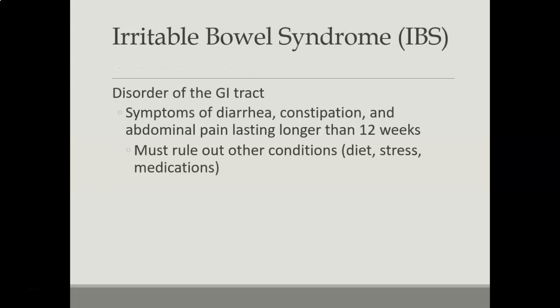Irritable bowel syndrome is a disorder where symptoms can be varied — diarrhea, constipation, or just abdominal pain — and generally would last longer than 12 weeks with other GI conditions ruled out. It's sometimes a little bit harder to nail down why IBS happens. It can be stress-related, diet, or medications, and it can also come and go.